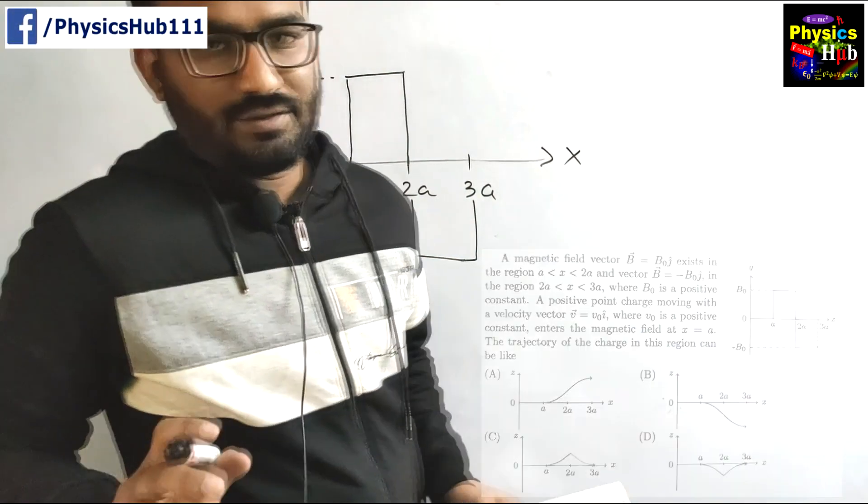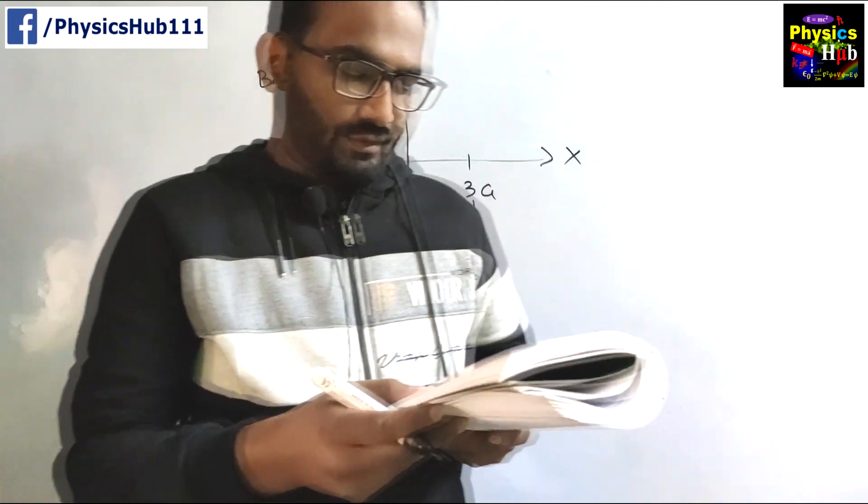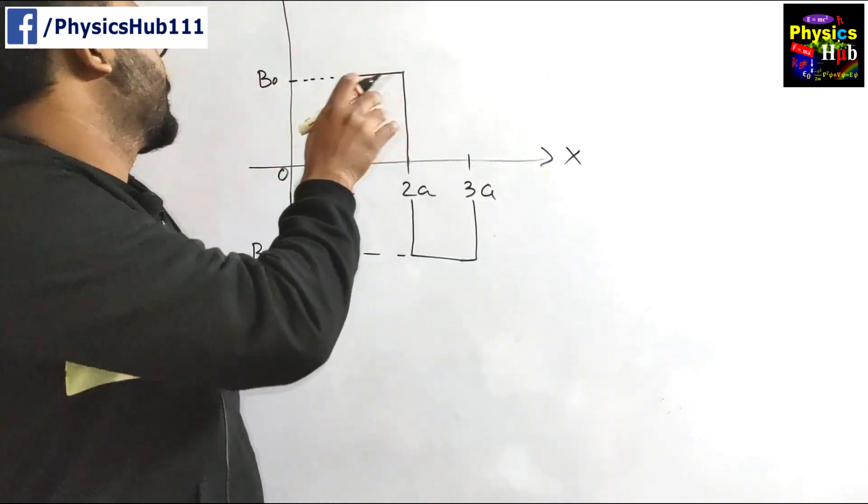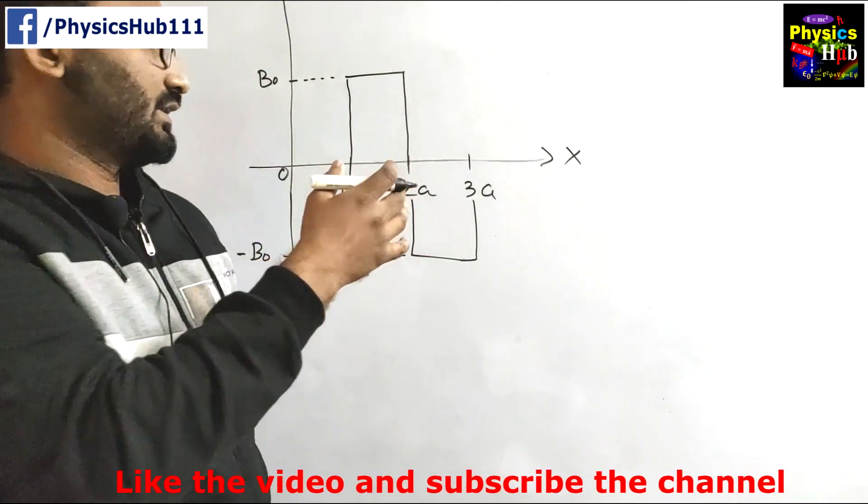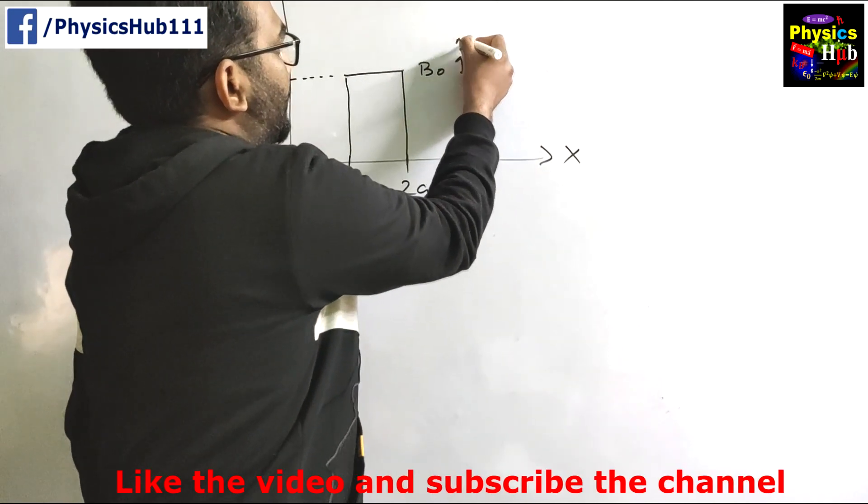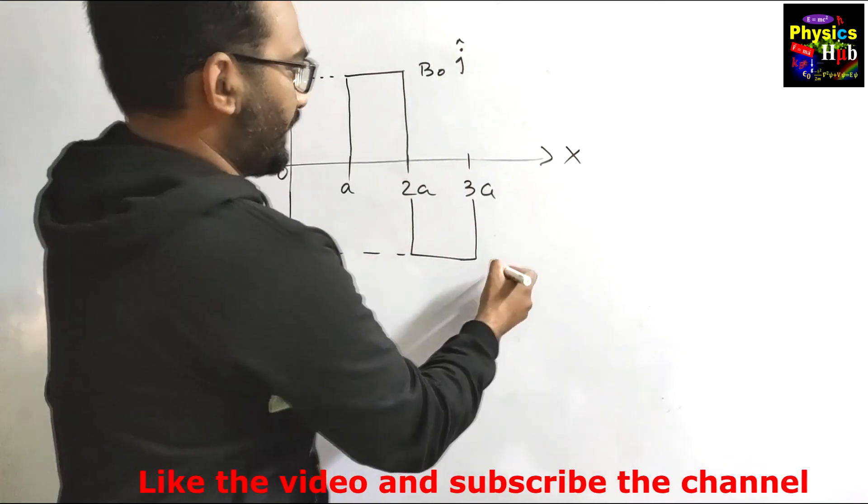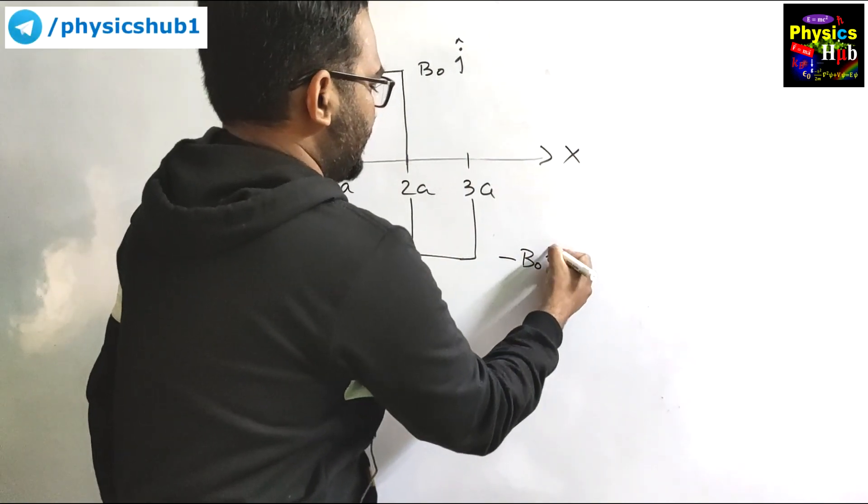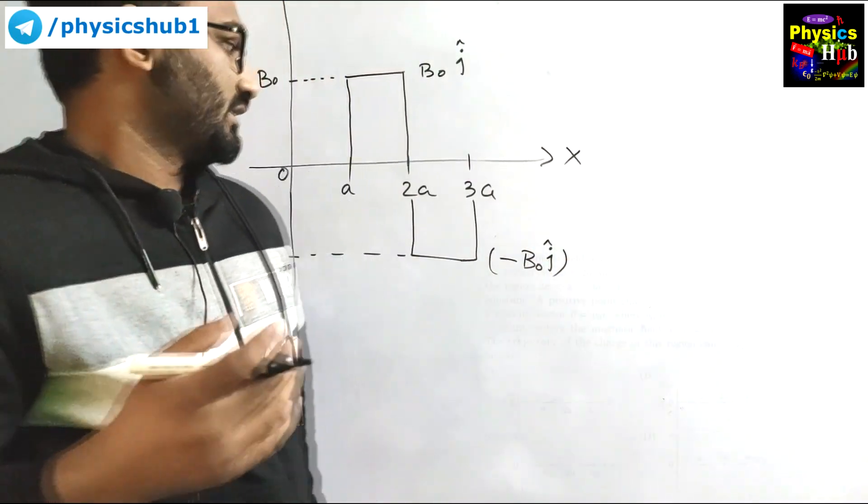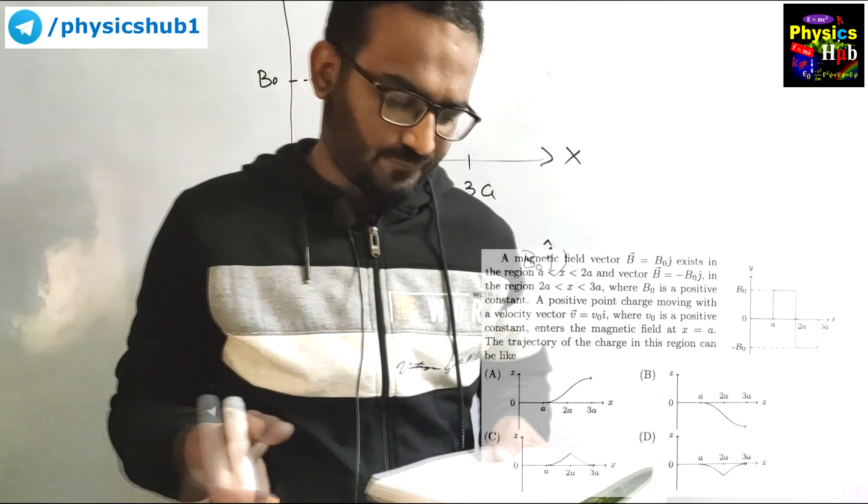This is the scenario given to you. If you want to represent this magnitude of magnetic field mathematically you can just write it here B naught j cap, and here it is on the negative side you can write minus B naught j cap. Magnitude is same but they are directed in the opposite direction.